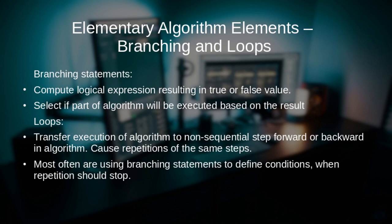You can either write the original variable into the result, or write the opposite of that variable. How do we explain to the computer how to decide which action to take? Such operations are called branching or conditional execution, for which we use conditional operators. For example, this could be an if-clause that exists in almost every programming language. This clause consists of three essential parts, and the input of that clause is some condition.